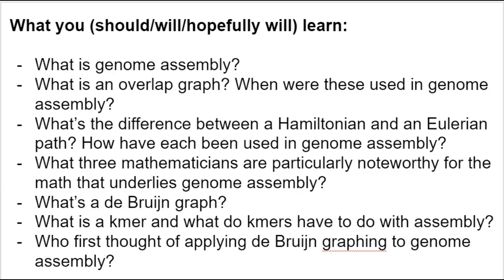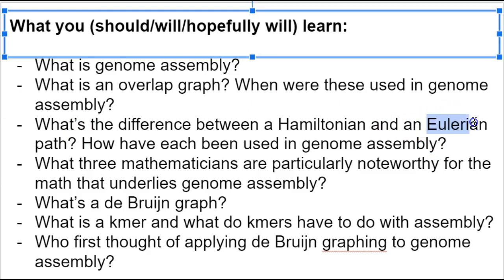We're going to talk about genome assembly. We'll use terms like overlap graph and think about when and in what context those were used in genome assembly. We're going to talk about Hamiltonian and Eulerian paths — Eulerian is how you pronounce this word.